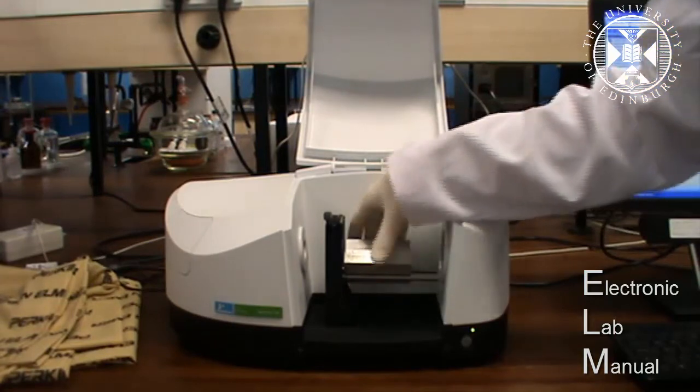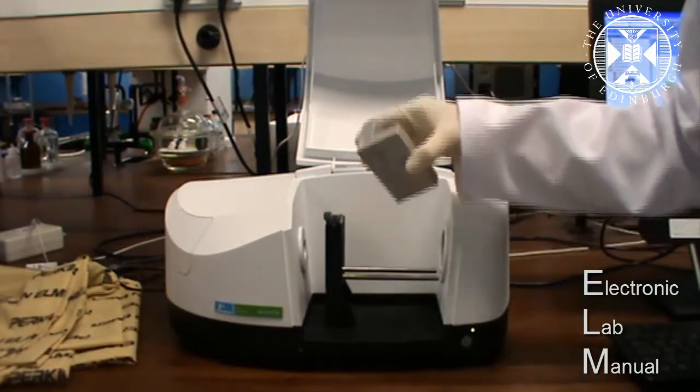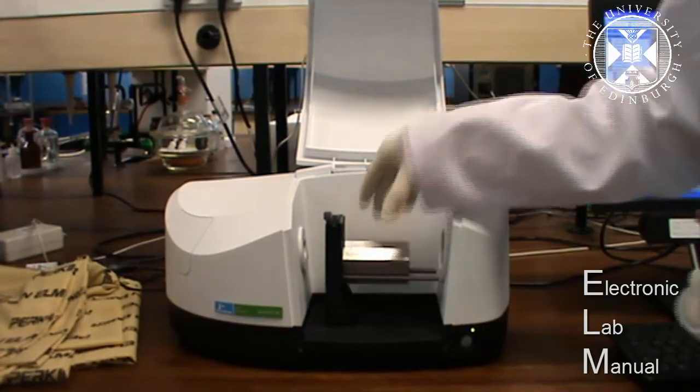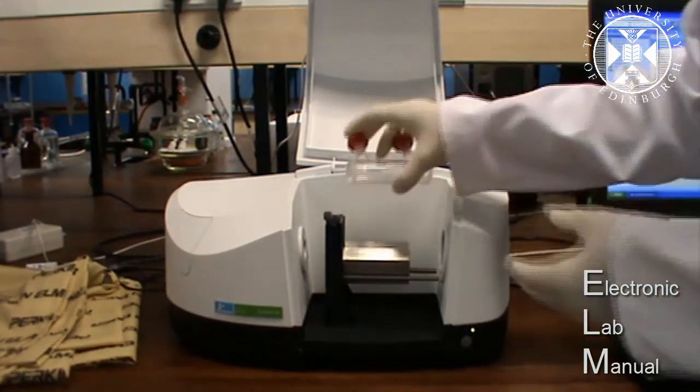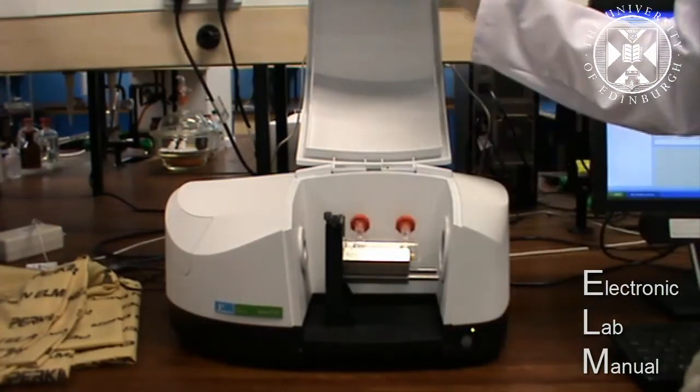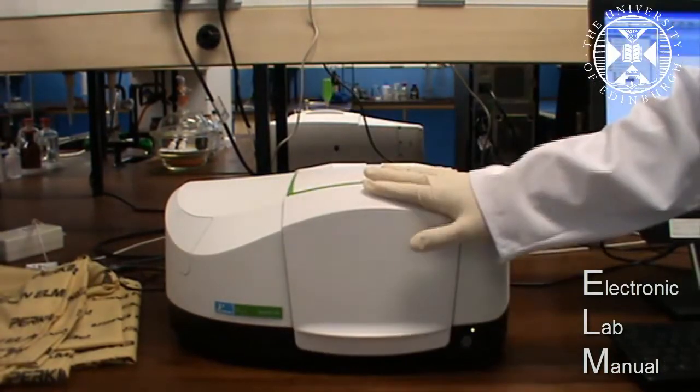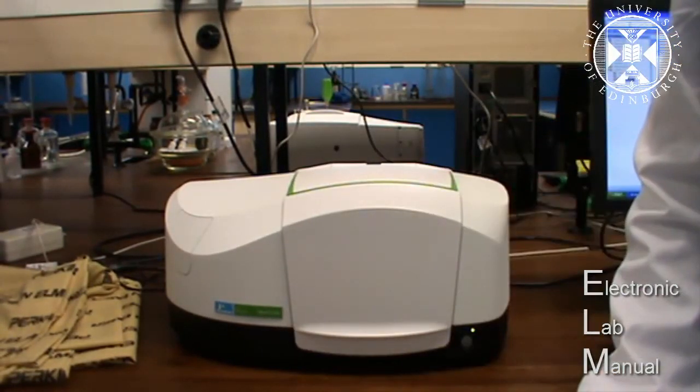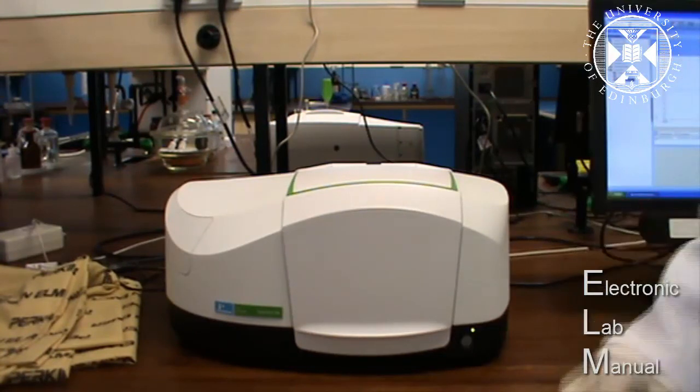We've got this metal block which we place on this railing, and that way the gas cell can be placed in like so. Close the lid and then we hit scan on the program on the computer.